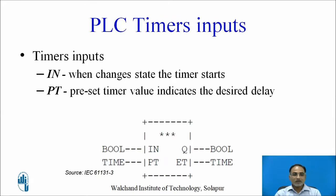Let us learn about the timer inputs. On the function block you will see two inputs represented by IN and PT. When the IN input changes its state, the timer starts counting towards the preset time. The data type associated with IN is boolean, meaning you expect either 0 or 1. The second input is PT, which stands for preset time. This value indicates the desired delay you want in your operation, and its data type is time, meaning you specify the delay in seconds.